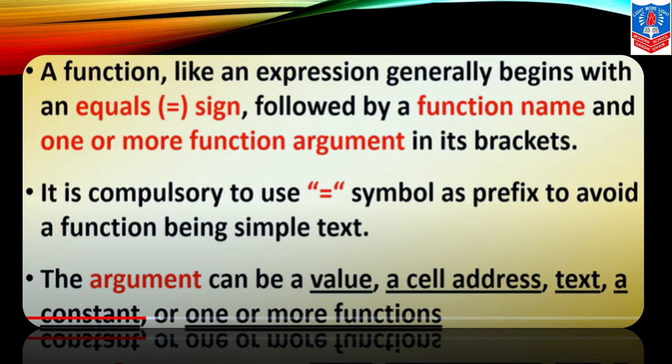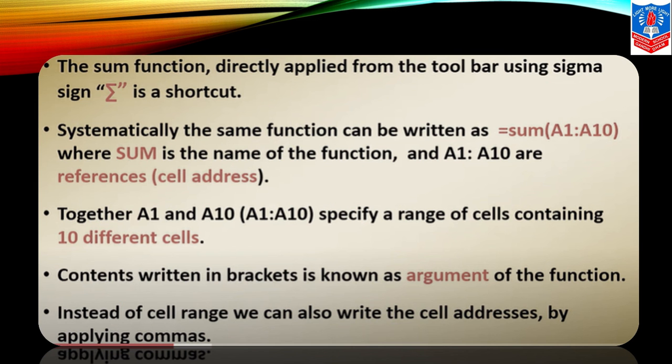Let's recap. Function like an expression generally begins with equals sign, followed by a function name, one or more function arguments in its brackets. Compulsory to use equals symbol as prefix to avoid function being simple text. The argument can be a value, a cell address, text, constant, or function. The name of the function, A1 to A10, are the references known as cell address. Together, A1 and A10 specify the range containing the 10 different cells. Content written in the brackets is the argument of the function.